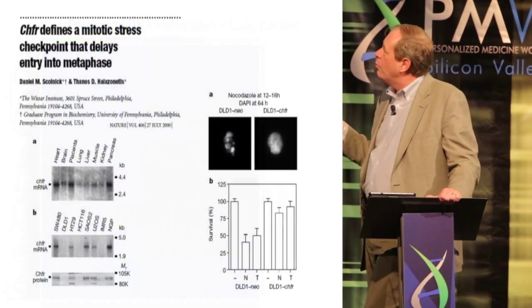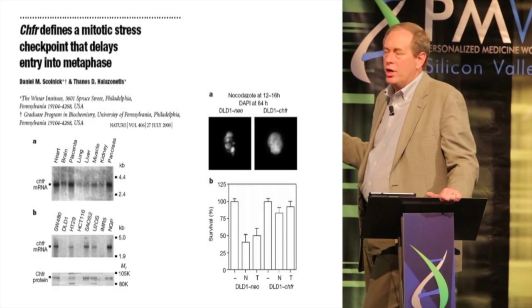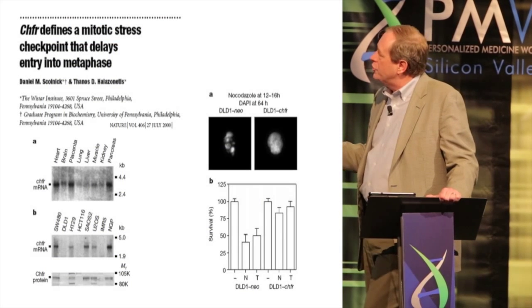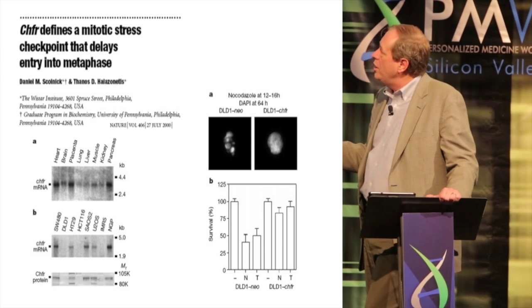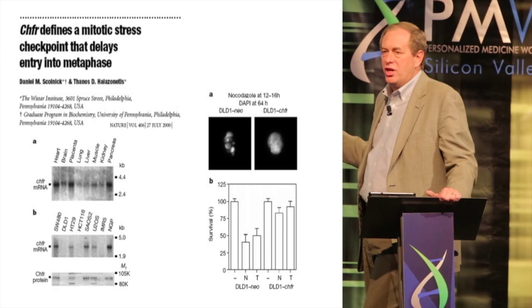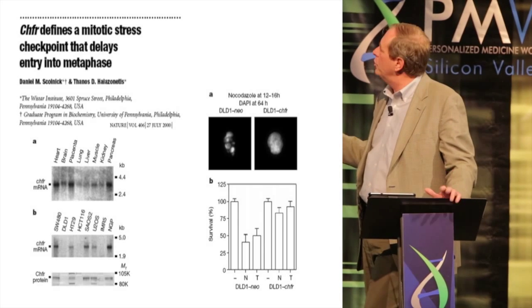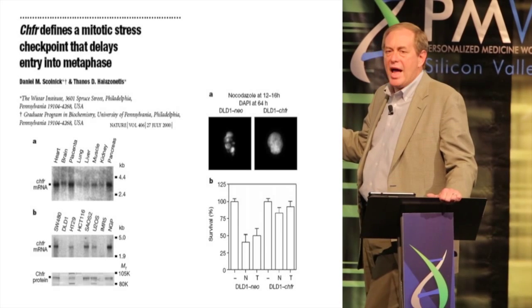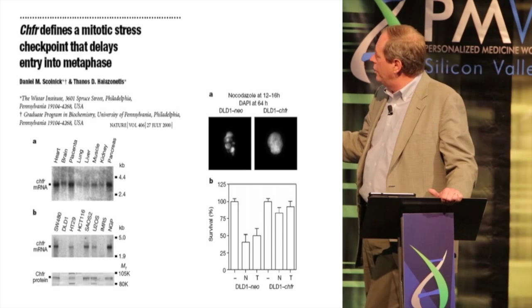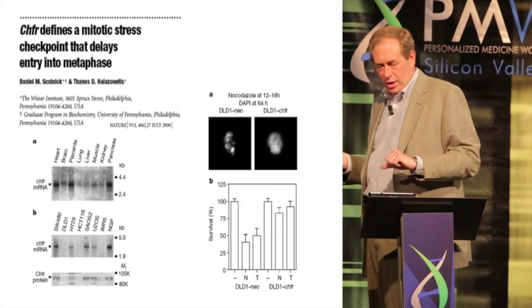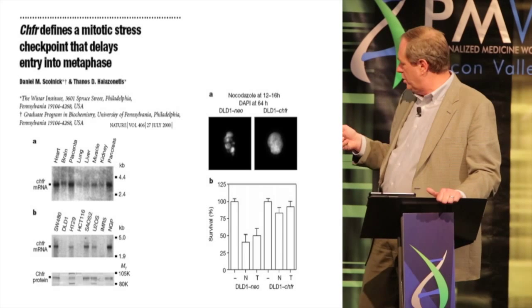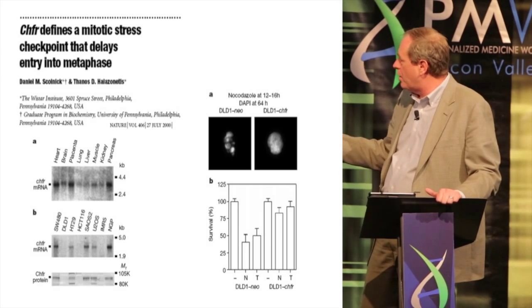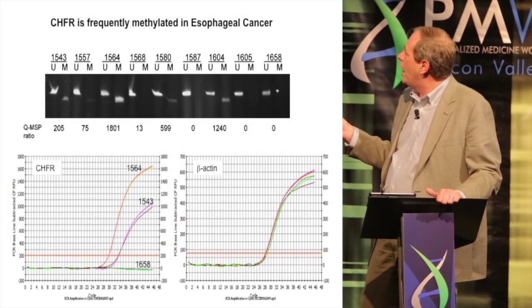Another example where this is potentially useful is the checkpoint forkhead gene, CHFR. This gene was shown to be inactivated with loss of expression in certain cancer cell lines. Importantly, this creates a phenotype that sensitizes cells to things that affect the microtubule — in this case nocodazole. Putting the gene back in rescues the phenotype, but tumors lacking CHFR undergo apoptosis when treated with a taxane. Again, a phenotype is directly related to this alteration, and the alteration is due to DNA methylation and silencing.